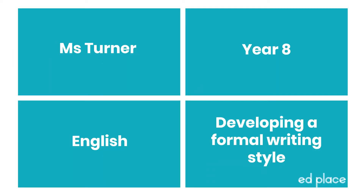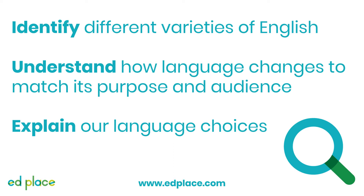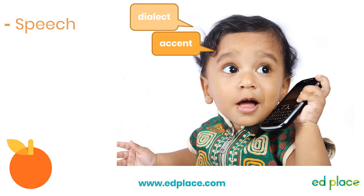Welcome to today's English lesson on developing a formal writing style with Miss Turner. By the end of today's lesson, we're aiming to have achieved one or all of the following three steps: to be able to identify that there are different varieties of English; to understand how the language we use changes to match its purpose and audience; and to explain why and how we make our language choices.